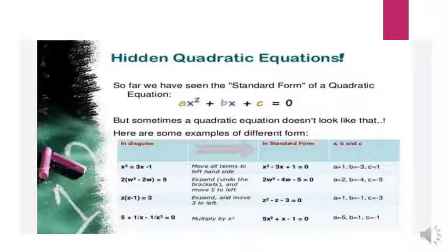Example 1: x² = 3x - 1. You can change it into standard form and then find the constants a, b, and c by moving all terms to the left-hand side.